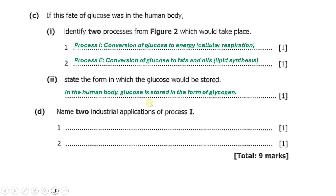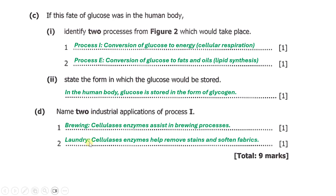Part (d) asks: name two industrial applications of process I, which was respiration. One industrial application is in brewing, where enzymes involved in respiration assist in the brewing process. Another industrial application is in laundry, where enzymes produced in respiration help remove stains and soften fabrics.